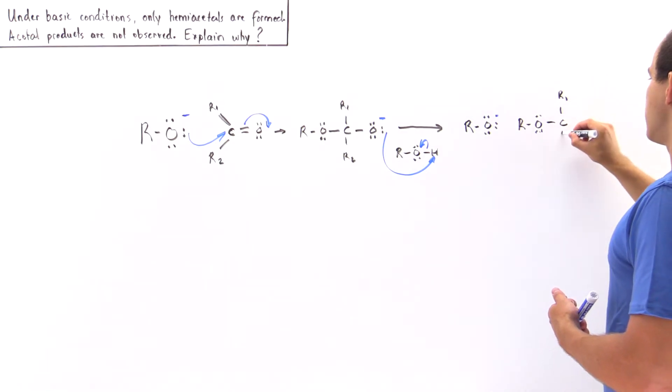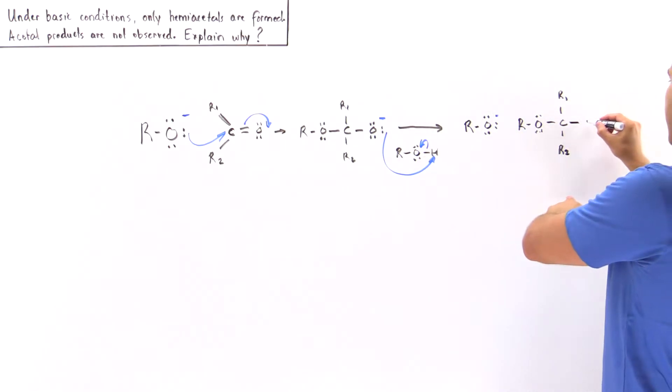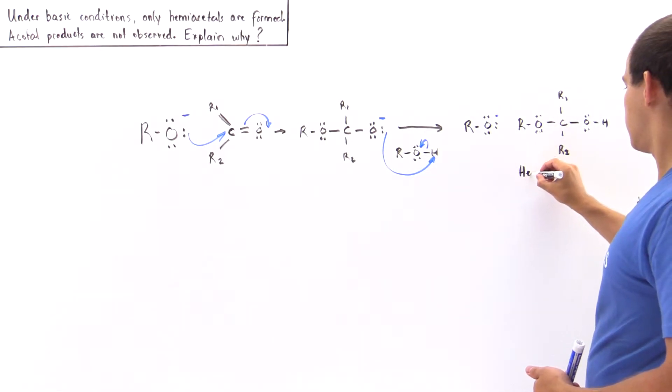We have the R1, the R2 group attached to our carbon, and we have the oxygen which is now protonated. So this is our hemiacetal product.